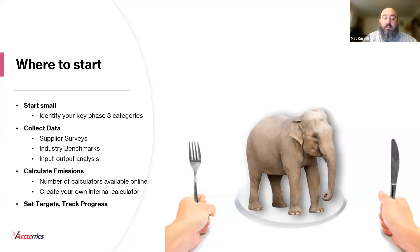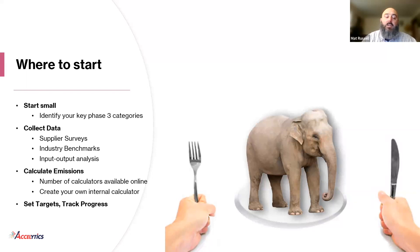You really do have to eat an elephant one bite at a time. Start small — identify key phase three categories, don't try to identify them all. We're good at ABC segmentation and XYZ segmentation; do the same things with your emissions and go after your A's first. Take supplier surveys, understand what's out there for industry benchmarks. Input-output analysis is where everyone is ultimately going to end up. Then calculate the emissions — there are calculators available online, you can create your own internal calculator — and set targets and track progress. This is no different than when we're dealing with a delivery problem or an inventory problem: we need to measure it so we can manage it.